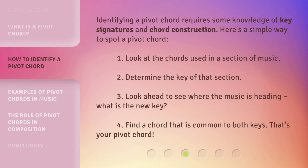Identifying a pivot chord requires some knowledge of key signatures and chord construction. Here's a simple way to spot a pivot chord: 1. Look at the chords used in a section of music. 2. Determine the key of that section. 3. Look ahead to see where the music is heading — what is the new key? 4. Find a chord that is common to both keys. That's your pivot chord.